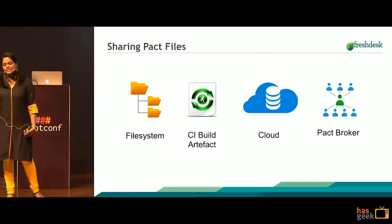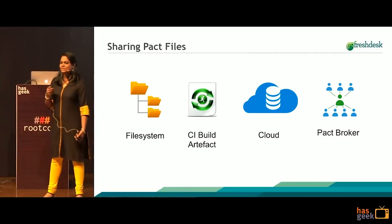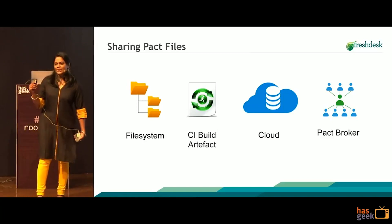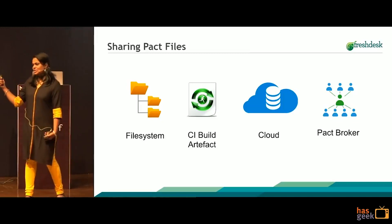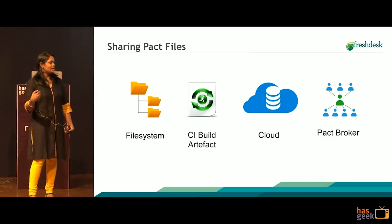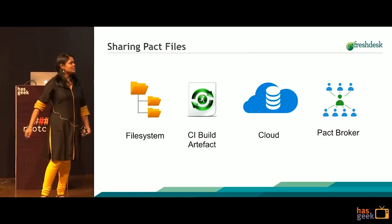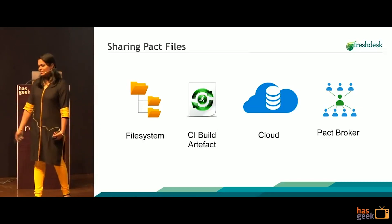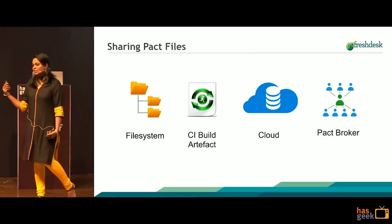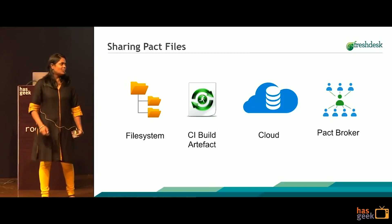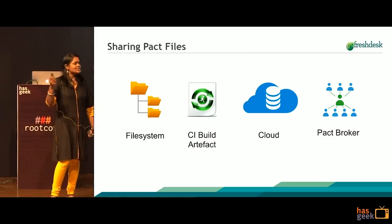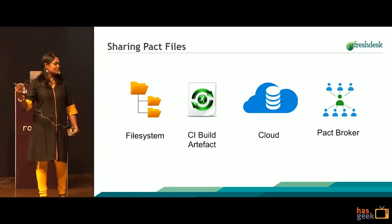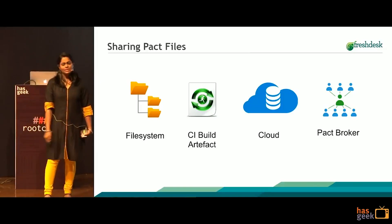The PACT file can be shared in various ways. One is using the file system — if you have both services in the same file system, you can just share the file path. Or if you have a CI pipeline defined for each microservice, you can have PACT verification and generation steps as part of your build pipeline and publish them as artifacts. Or you can store the PACT file in the cloud, maybe S3. Or there's something called the PACT broker, which is a module provided by the PACT tool itself — it's a repo for collecting all PACT files with features like webhooks and version tagging for prod, staging, etc.